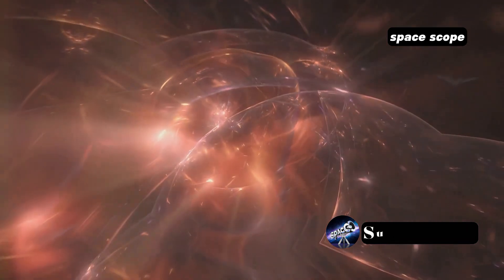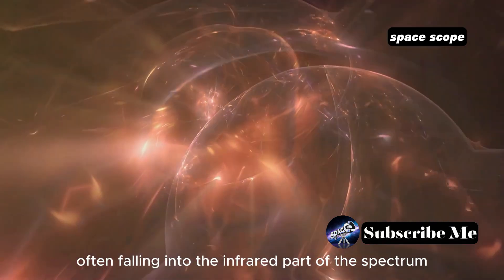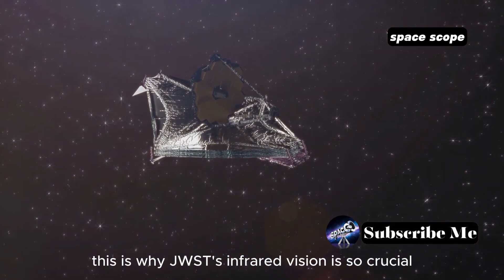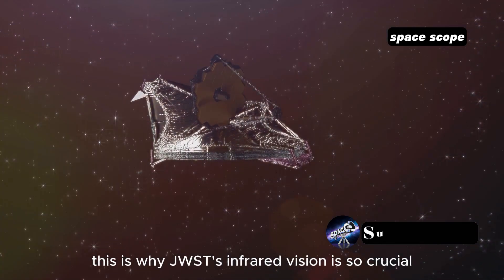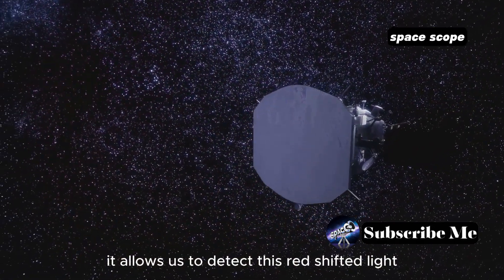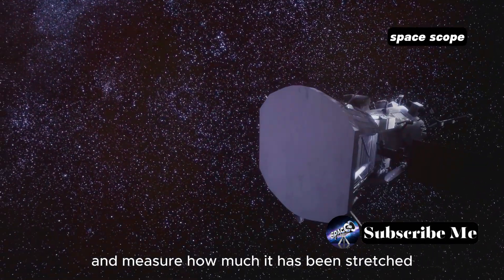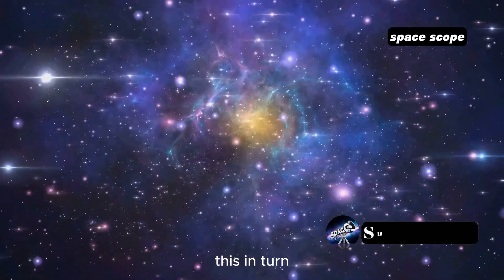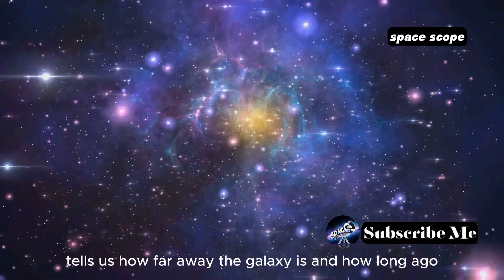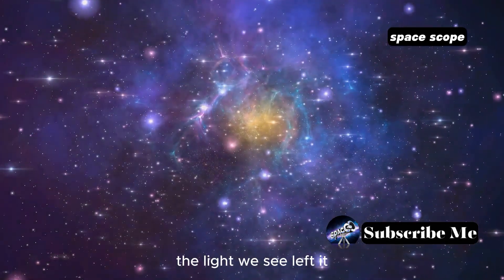This is why JWST's infrared vision is so crucial. It allows us to detect this redshifted light and measure how much it has been stretched. This in turn tells us how far away the galaxy is and how long ago the light we see left it.